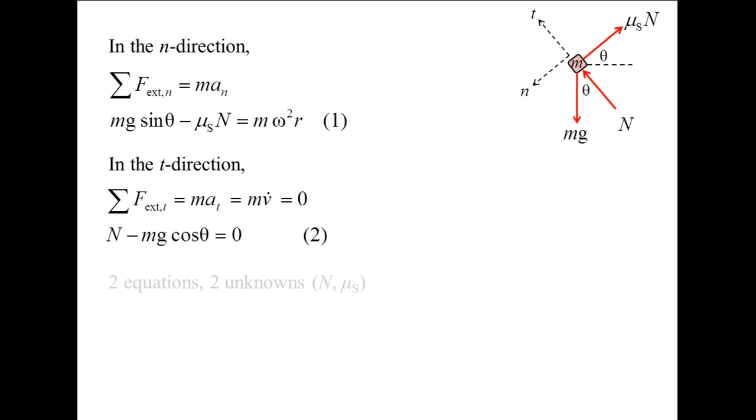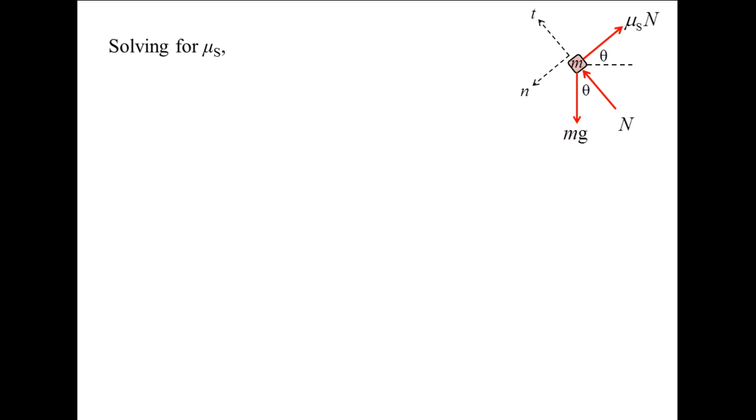We now have two equations and two unknowns. Solving for the coefficient of static friction and plugging in the values of the variables, we find that mu s is 0.54.